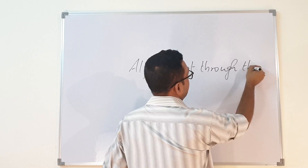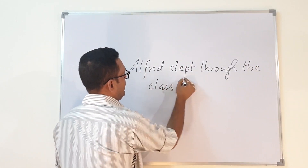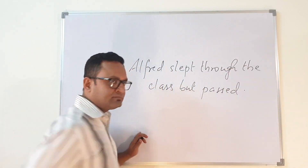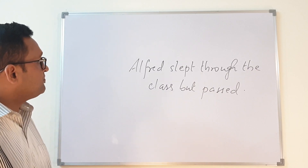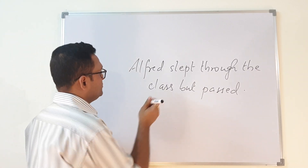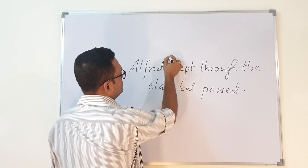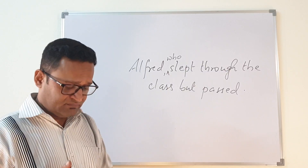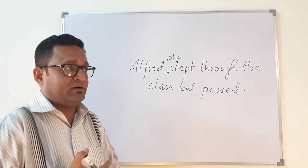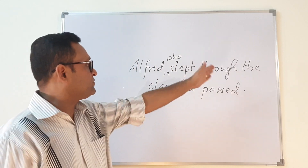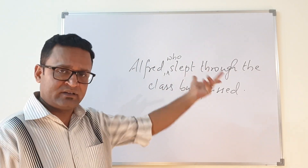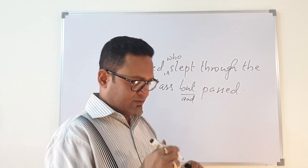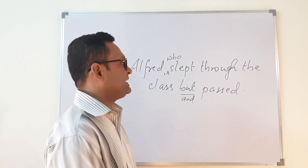So this expression can also be written as: Alfred who slept through the class but passed, or Alfred who slept through the class and passed — because 'but' can also be read as 'and'. So you can have an expression like that. The first thing you need to understand is that it contains two propositions.